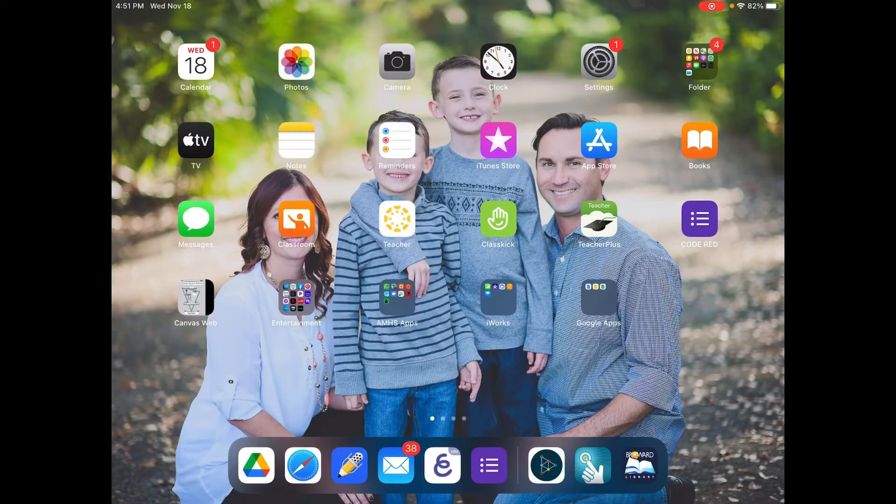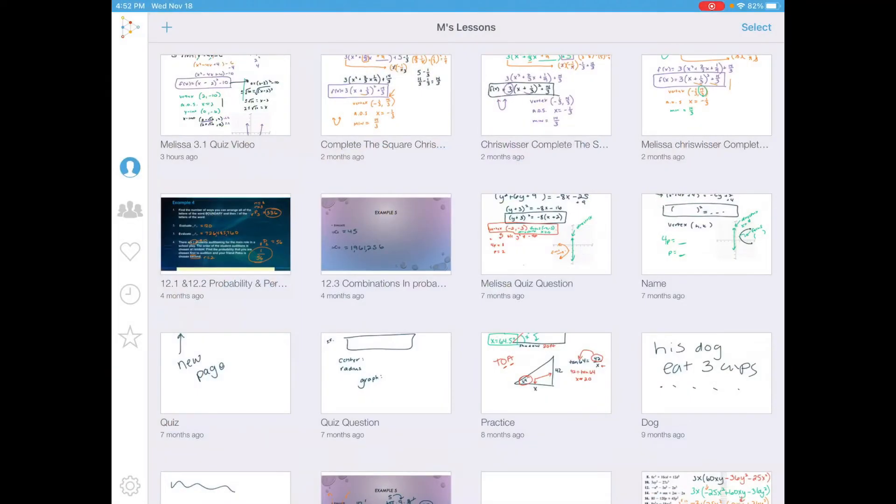Now I'm going to open Educreations. When you get into Educreations, the first time you get in there, you might see a white screen. If you hit the arrow back on the left, you get to your library, which looks like this. To create a new one, I'm going to hit the plus symbol on the top left and I get that white board.